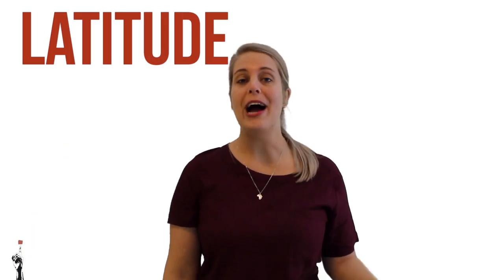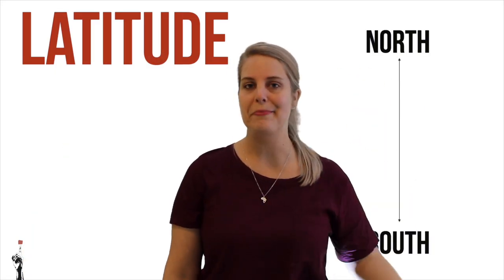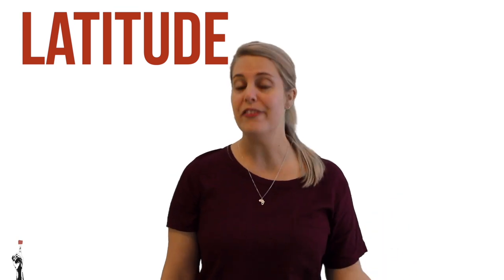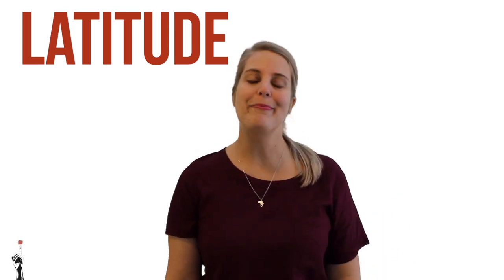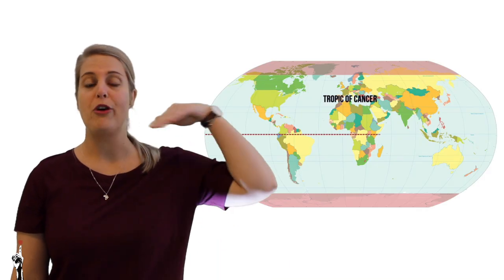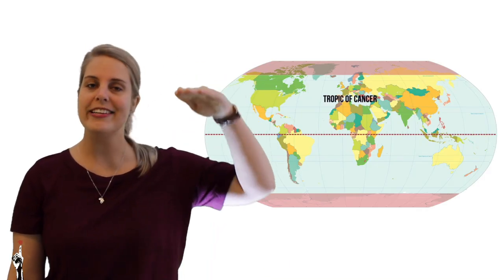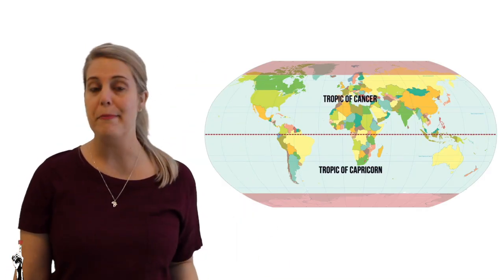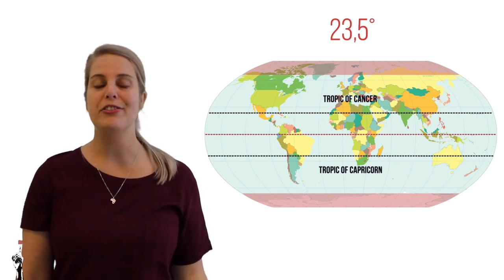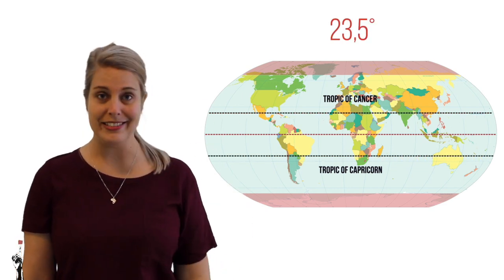Latitude refers to how far north or south a place is. The line of latitude that you are most familiar with will be the equator, which lies at zero degrees — essentially in the middle of the earth. Two other important lines of latitude are the Tropic of Cancer above the equator and the Tropic of Capricorn below the equator, both lying at 23 and a half degrees north and south respectively.